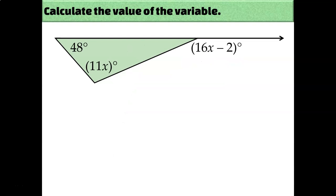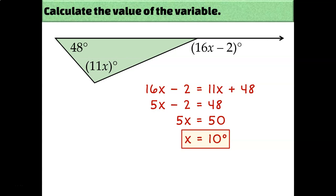You can also apply this to an algebraic context. Again just add your two non-adjacent angles together and set it equal to the exterior angle measurement. So my exterior angle is 16X minus 2, and I'll set that equal to 11X plus 48. And then just solve. Subtract 11X from both sides, add 2, divide by 5, and I find out that X equals 10.